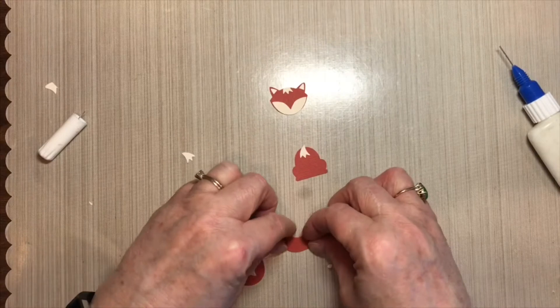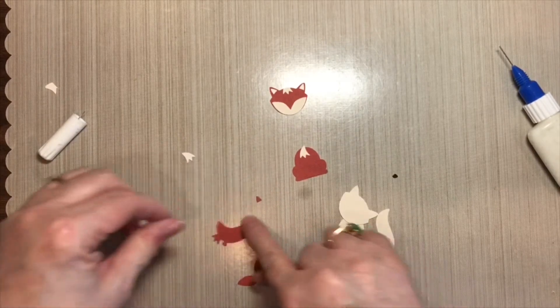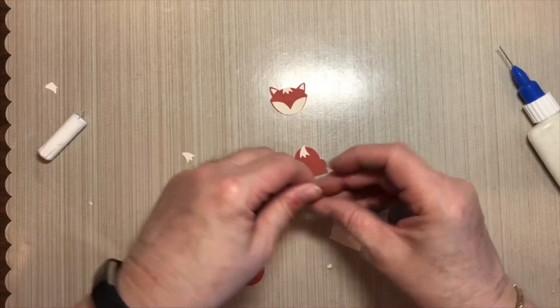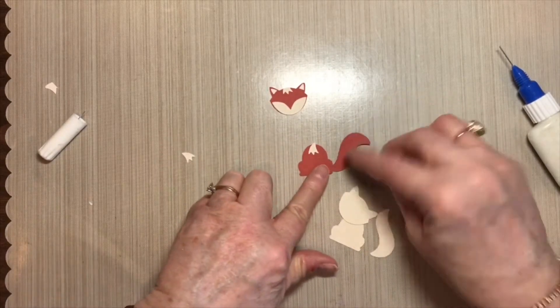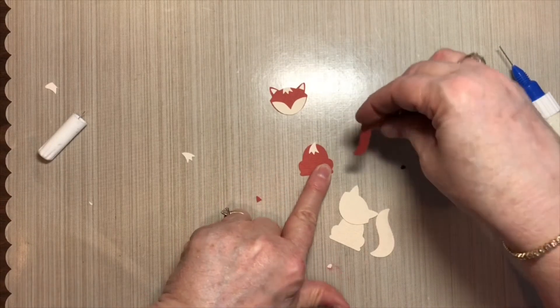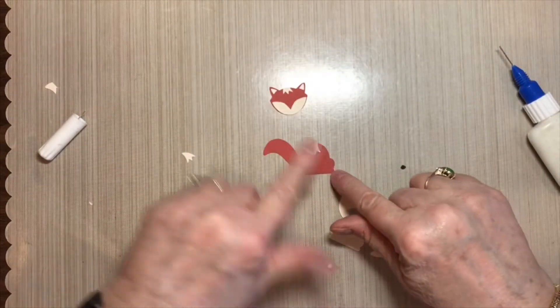And for his tail, just decide which direction you want his tail to be pointing. Do you want to have it on this side of the body or you could flip it and put it on that side of the body.